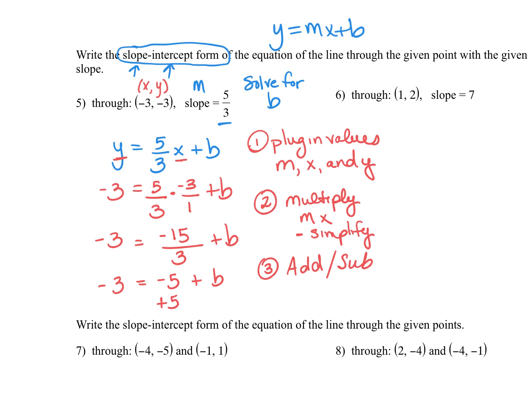So I'm going to add 5. So my -3 plus 5 gives me a positive 2. And that is my b value.